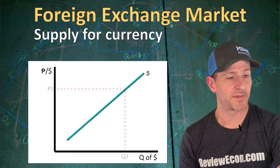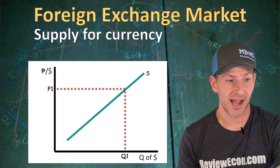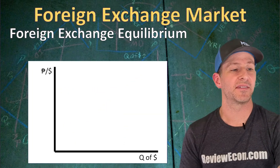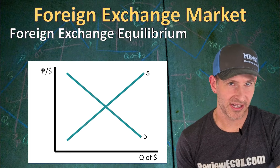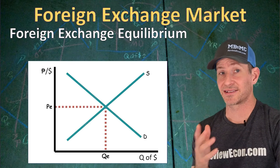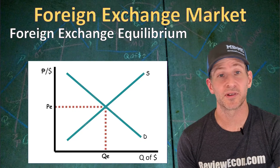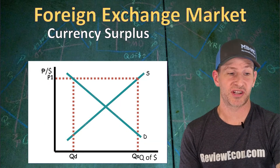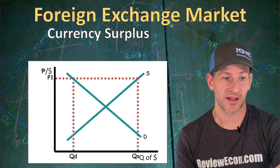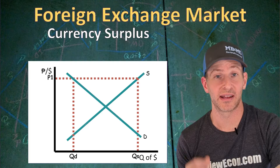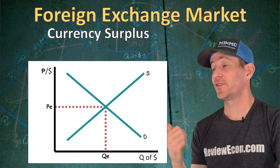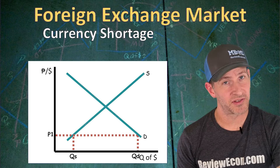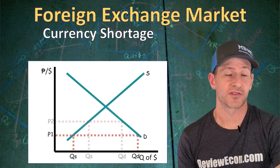Supply curves are upward sloping: at high exchange rates we have high quantities supplied, and at low exchange rates we have low quantities supplied. When you put supply and demand together, it gives us our foreign exchange equilibrium — where the two curves intersect gives us our equilibrium exchange rate and equilibrium quantity. We can have a surplus when the exchange rate is above equilibrium, and a shortage when it's below equilibrium. With freely floating exchange rates, the market always seeks equilibrium.